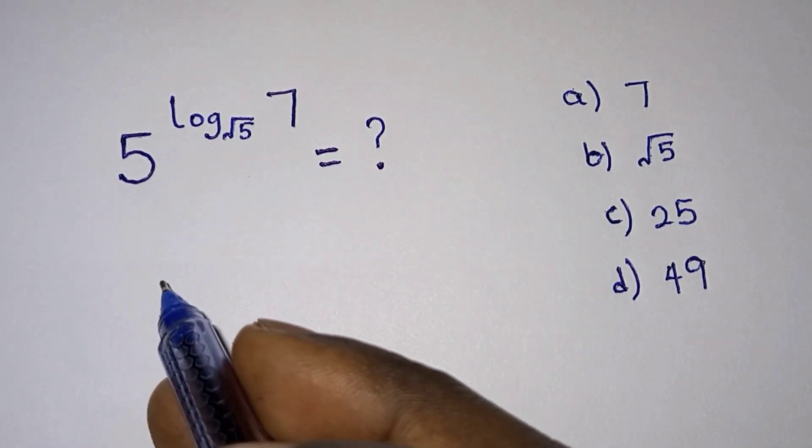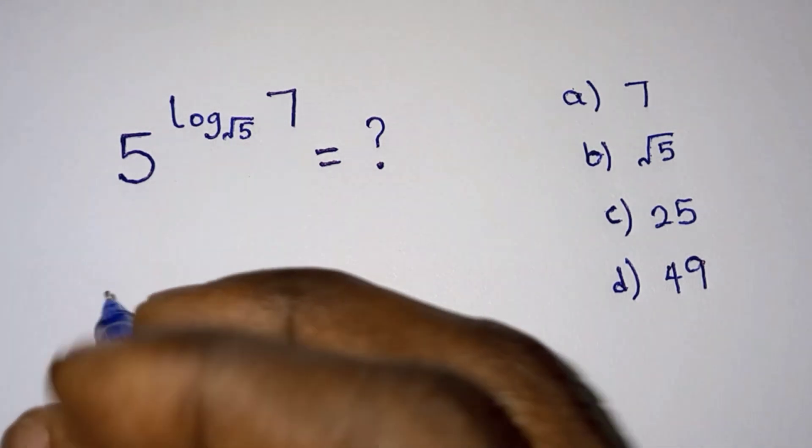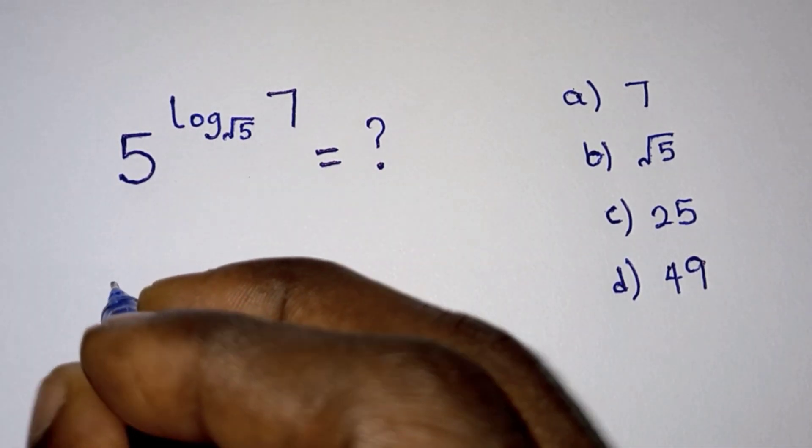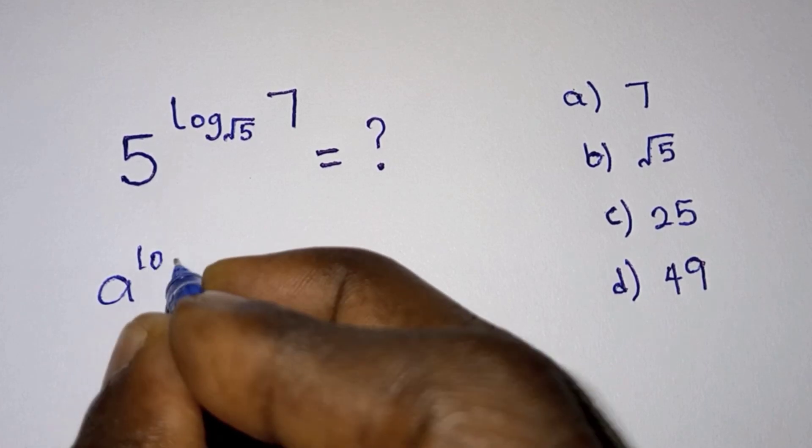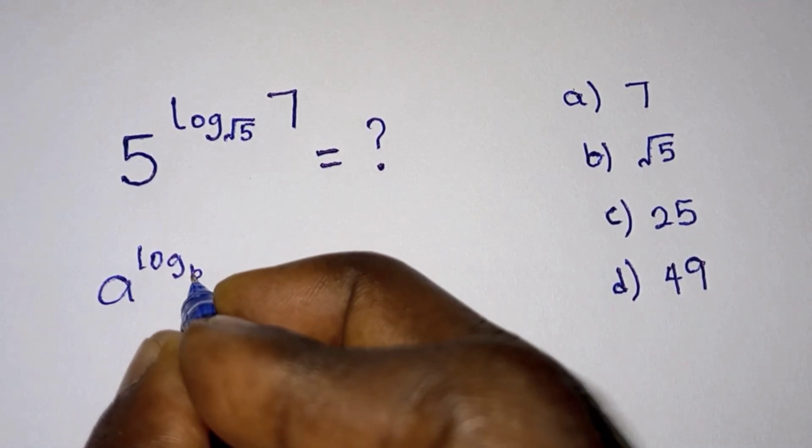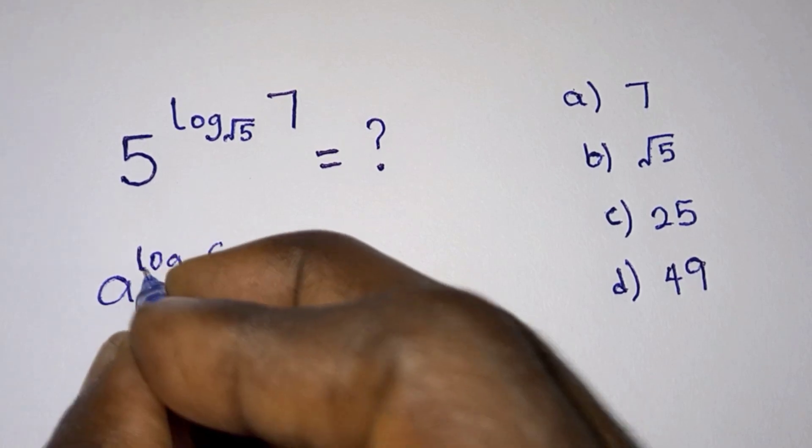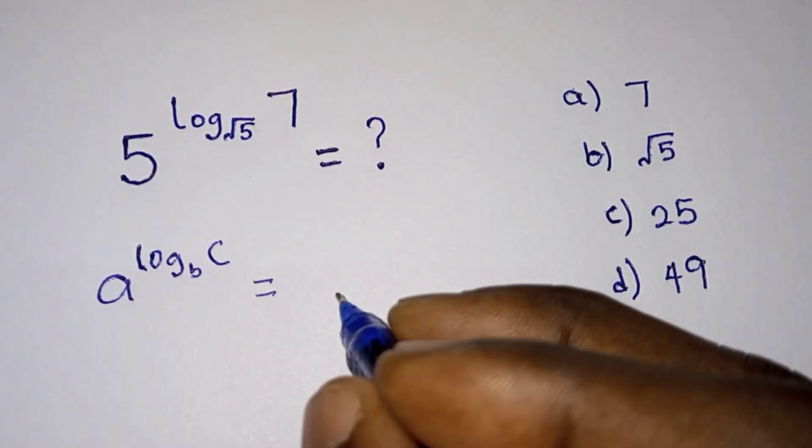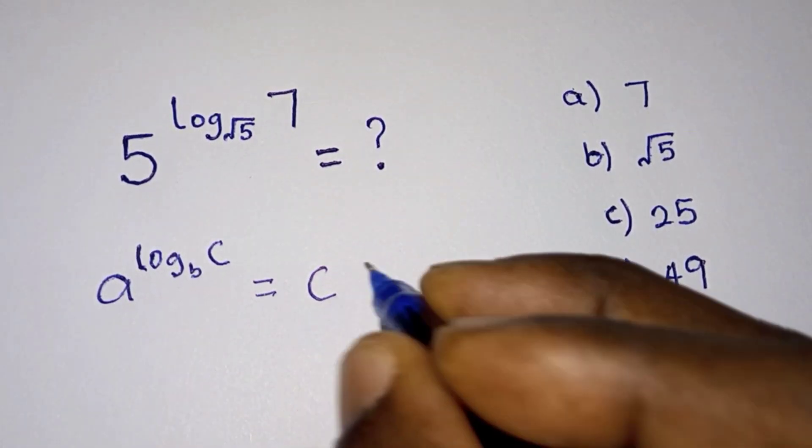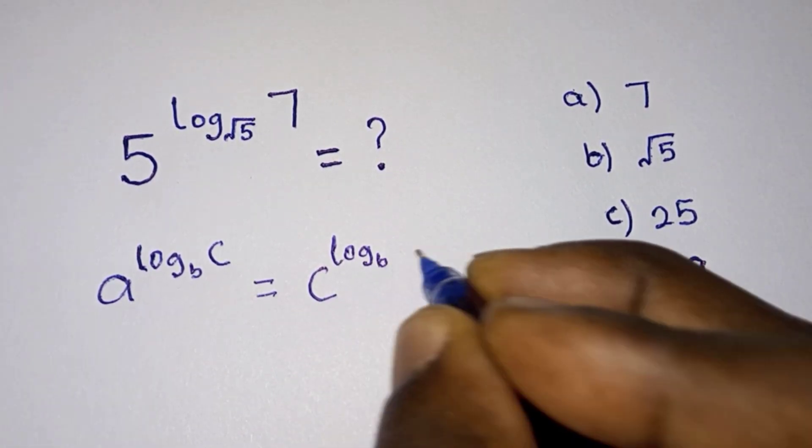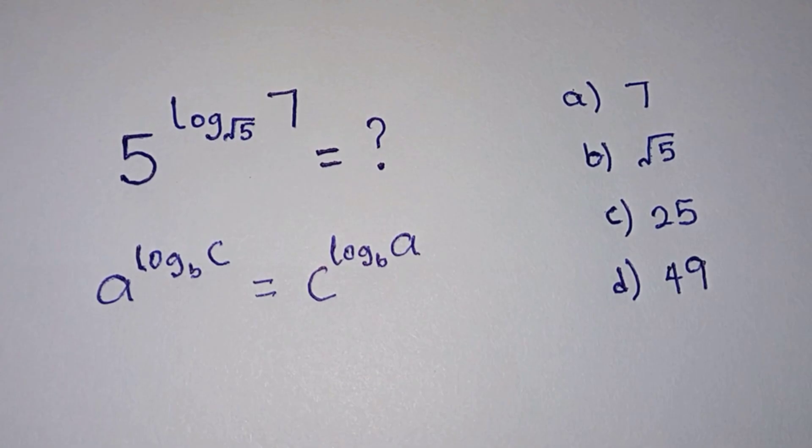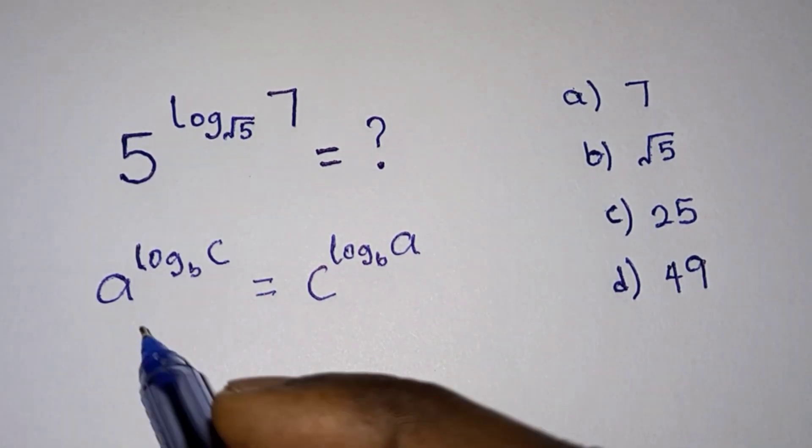Without using a calculator, first let's remember this rule: if we have a to the power log base b of c, this is the same as c to the power log base b of a. It's a matter of interchanging the positions of c and a. With this rule, we can easily solve the problem.